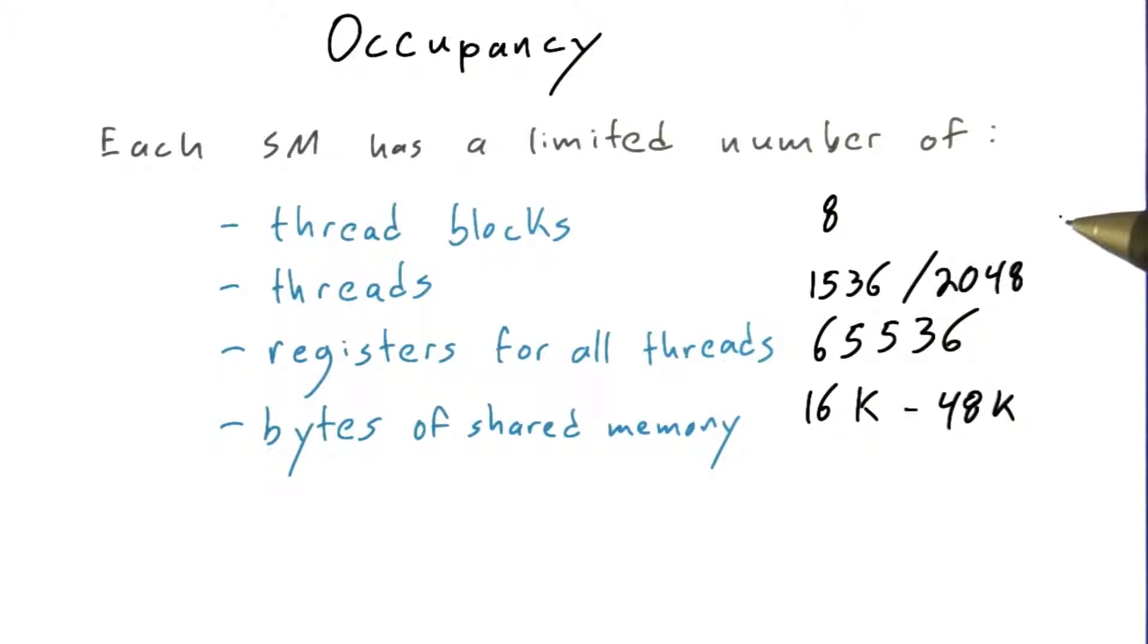There's a maximum number of 8 thread blocks. Usually one of these other things is going to get in the way first. The total number of threads that you want to run across all the thread blocks, the total number of registers that each thread is going to take, and the total number of bytes of shared memory that each thread block wants to use.